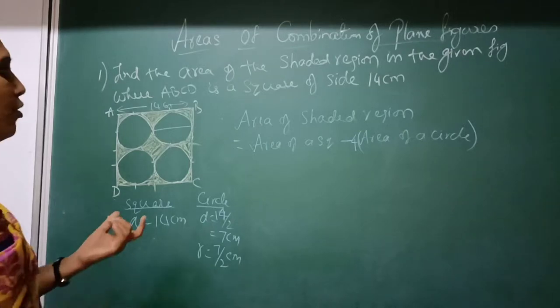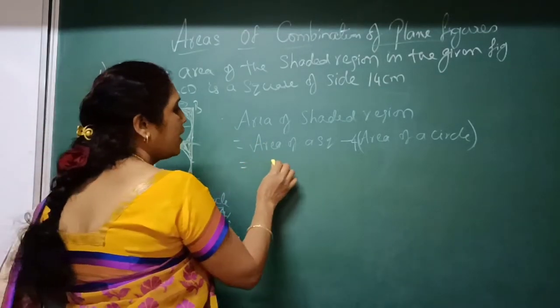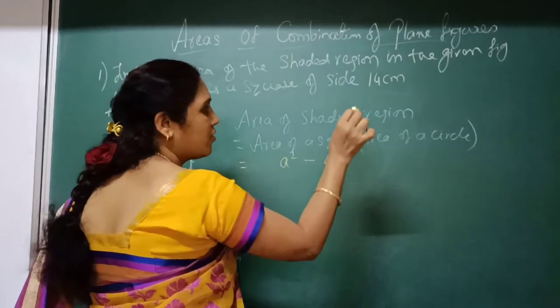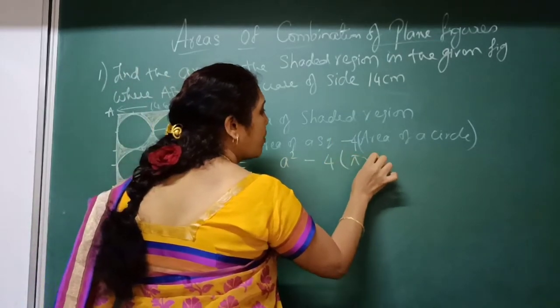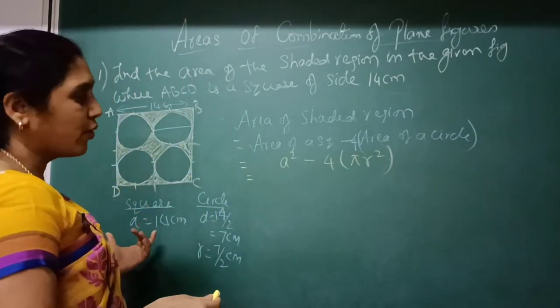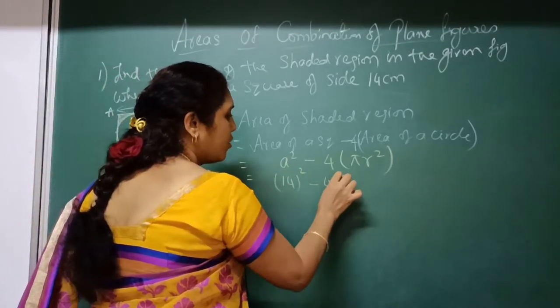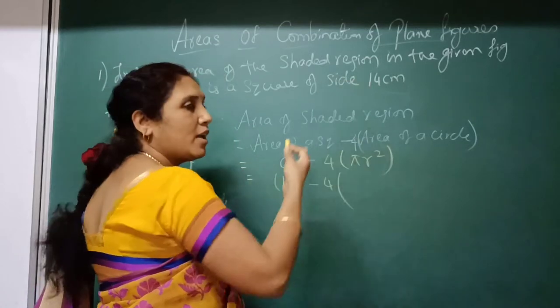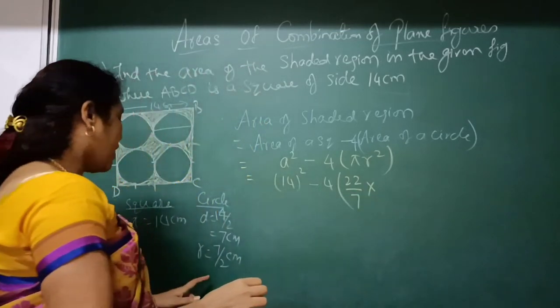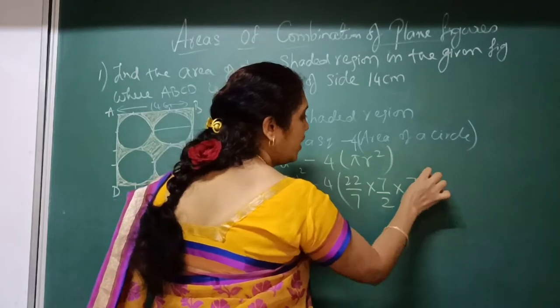Now, I know what is the formula to find area of a square. Already we have mentioned here previously, area of a square is a square minus 4 times area of a circle is pi r square. And what is your a? 14. 14 square minus 4 into pi. Nothing is mentioned here, so I can take it as 22 by 7 into r, R is 7 by 2 into 7 by 2.